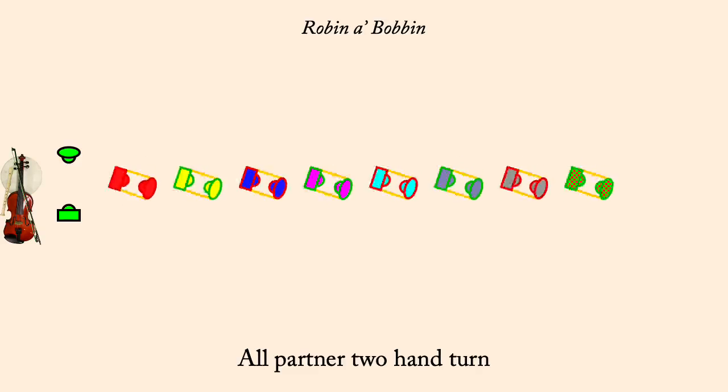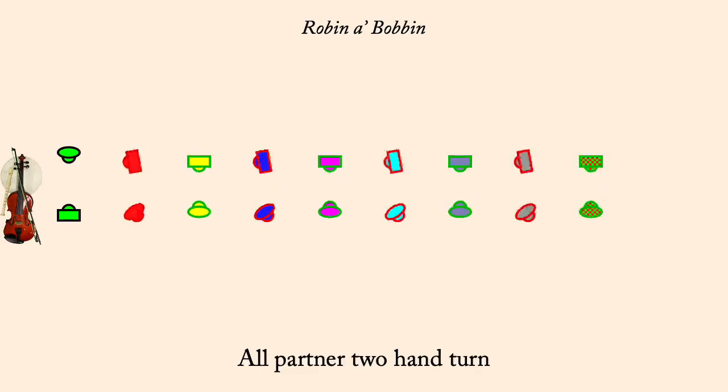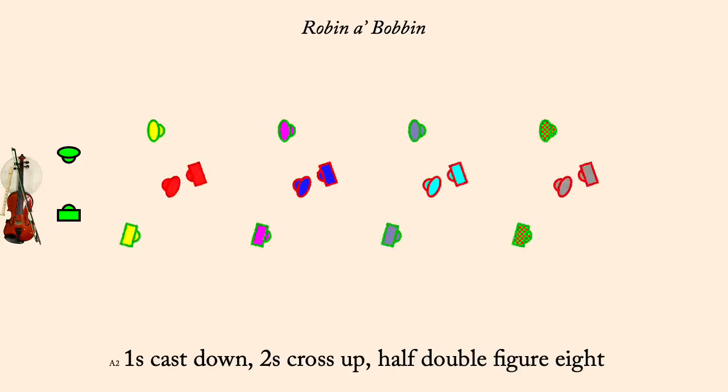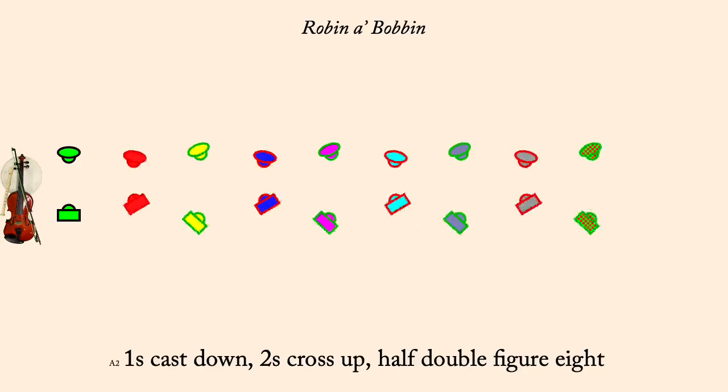Ones cast down, twos cross up, double half figure eight. Partner two-hand turn.